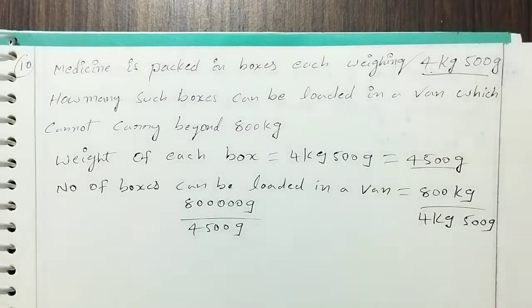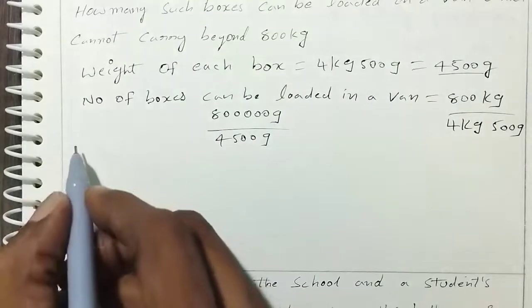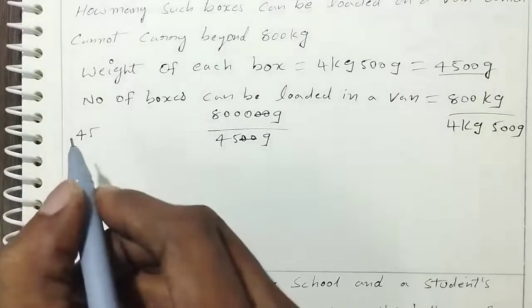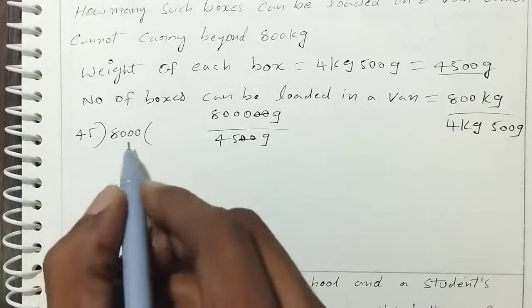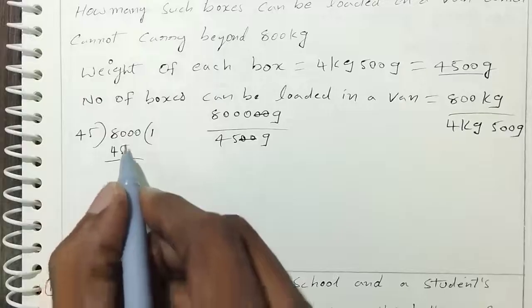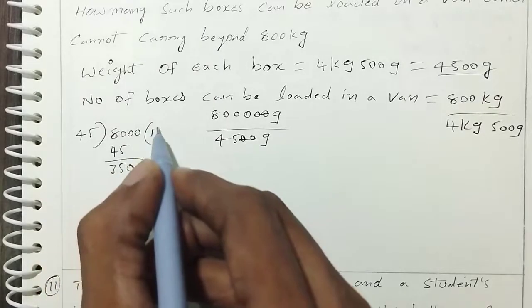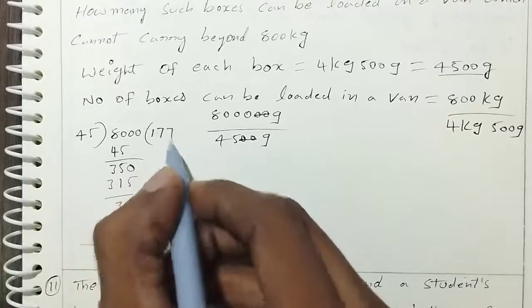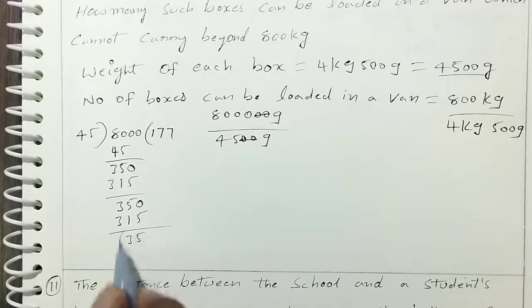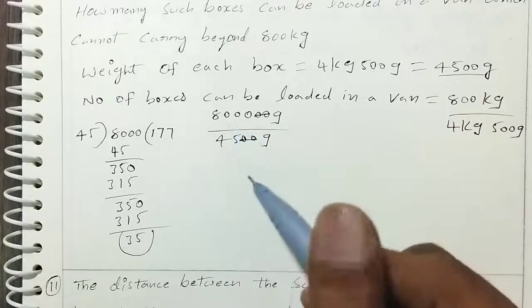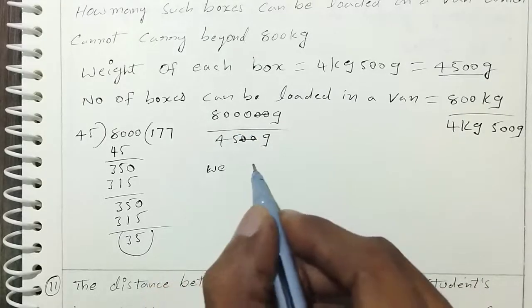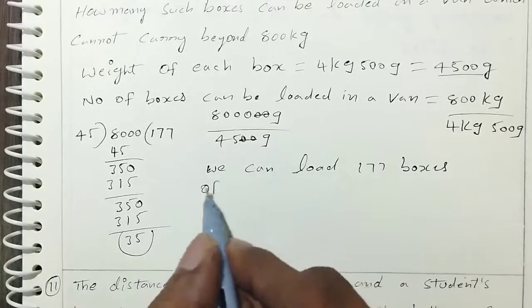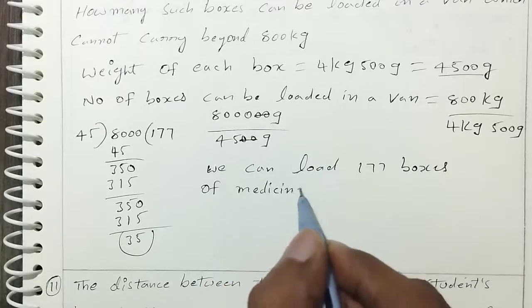This is a division problem. Cancelling zeros: 8,000 divided by 45. Working through: 45 ones are 45, and we get 45 boxes. We can load 45 entire boxes of medicine in the van.